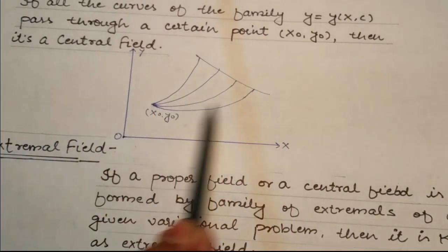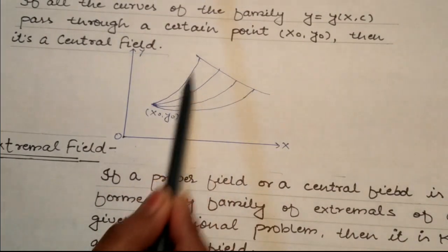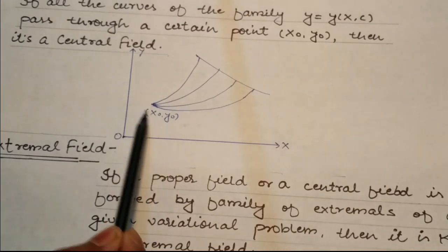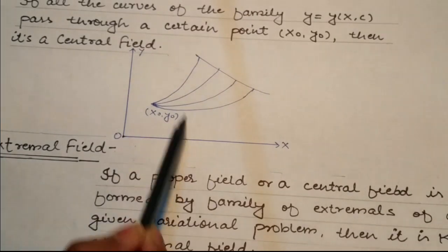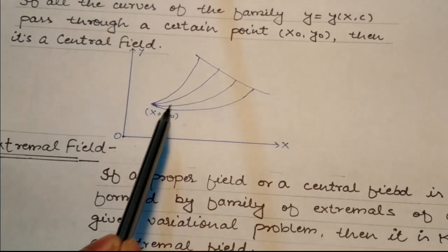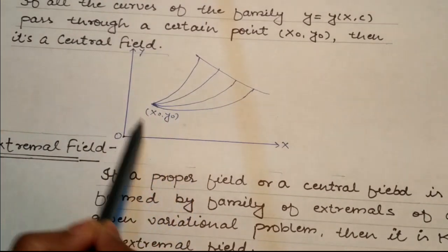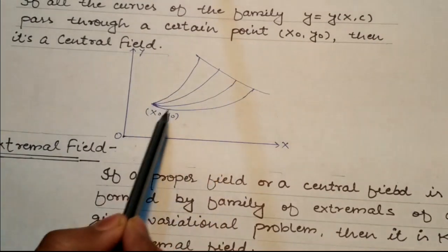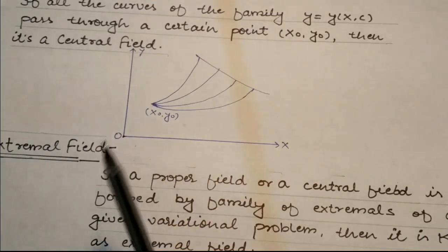Here I have an example figure where all curves originate from one point. That point is (x₀, y₀), and this is a central field family. So if all curves pass through one point, we call this a central field.